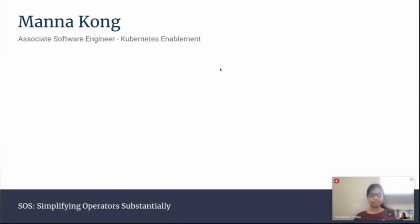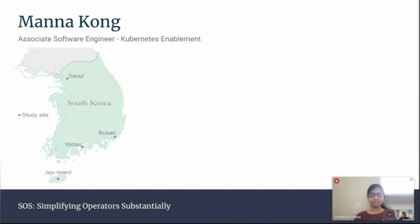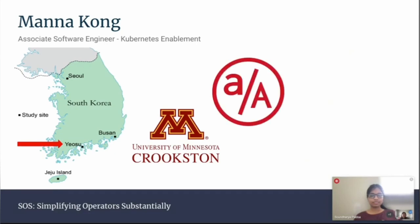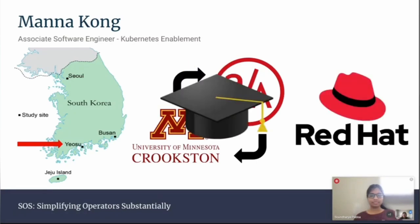My name is Mana. I'm an Associate Software Engineer at Red Hat. I work on the Ecosystem Experience Engineering team, specifically on the Operators Enablement team. Before software engineering, I was an English teacher in South Korea. I graduated with my English degree at the University of Minnesota. I decided I didn't want to be an English teacher anymore, so I went to App Academy, which is a coding boot camp, and that's how I landed my job here at Red Hat.